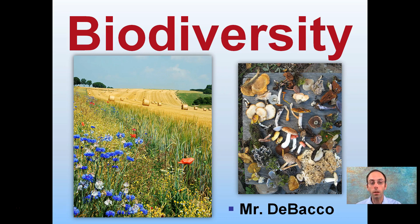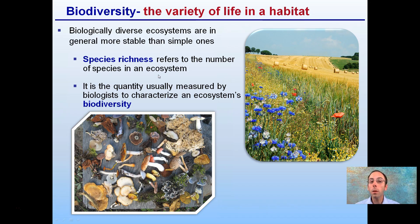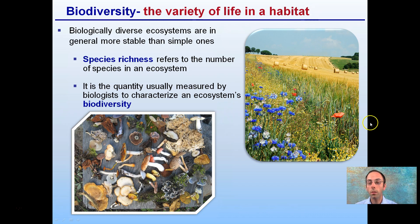Here we're looking at biodiversity, and we see an example with all the different mushrooms, flower types, grasses, hay, and trees. Biodiversity is defined as the variety of life in a habitat. Biologically diverse ecosystems are in general more stable than simpler ones — there's a lot of ability for different species to fill in certain conditions, or to buffer different climates, years, or weather patterns.